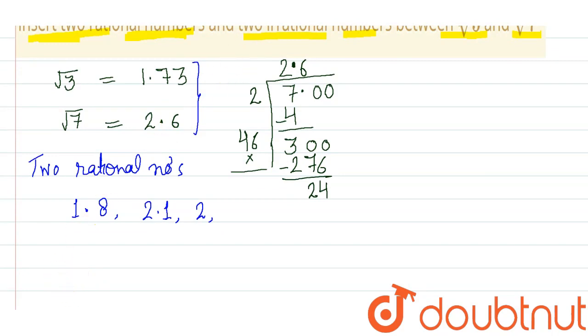And then for irrational numbers, irrational numbers, we will write non-terminating non-repeating numbers in between 1.73 and 2 point.